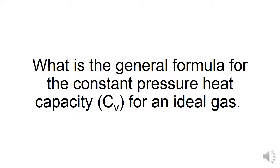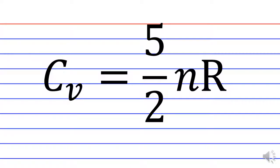What is the general formula for the constant pressure heat capacity of an ideal gas? C sub P, denoting constant pressure, for an ideal gas. C sub P equals five-halves nRT, with T denoting temperature in kelvin.